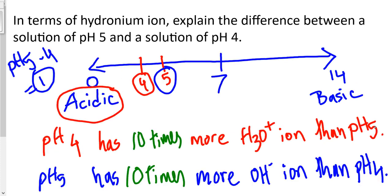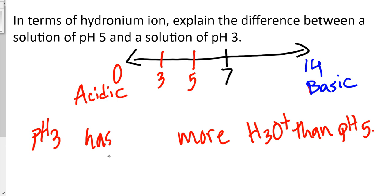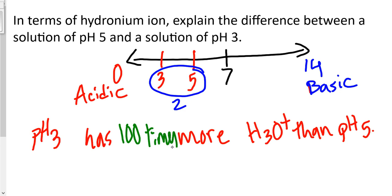How do we know? You can always go back to the diagram where pH 3 is here and pH 5 is here — pH 3 has more hydronium ion than pH 5. To be specific about the factor: the difference between 3 and 5 is 2, which means after 1 you have two zeros, so the factor is 100. Therefore, pH 3 has 100 times more hydronium ion than pH 5.